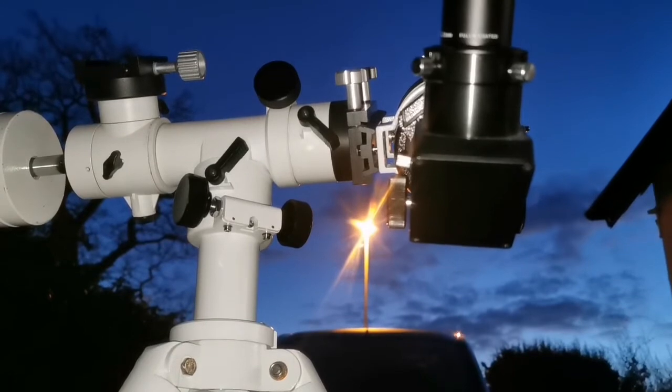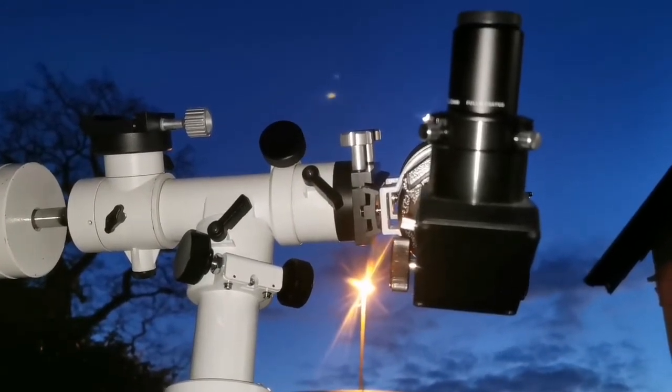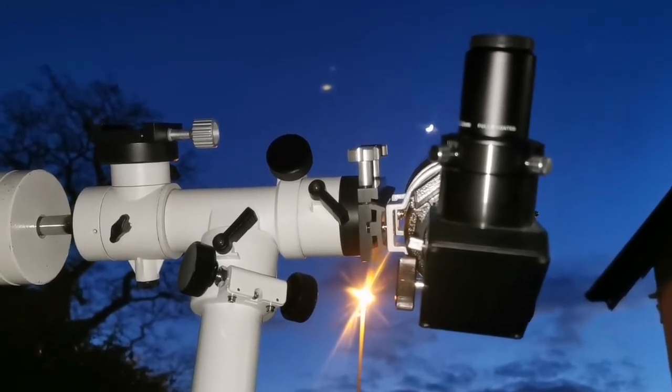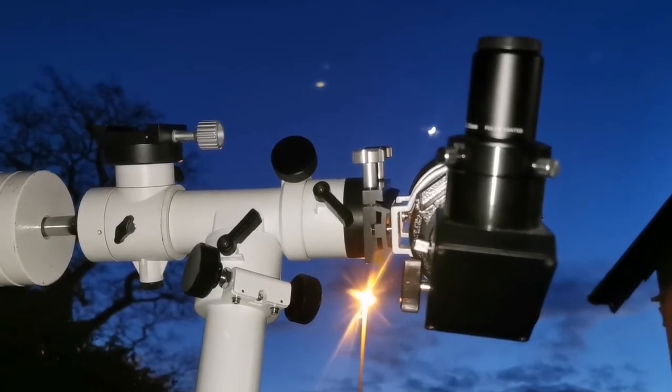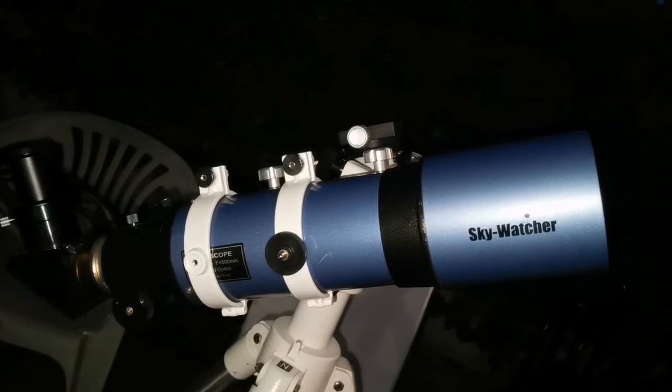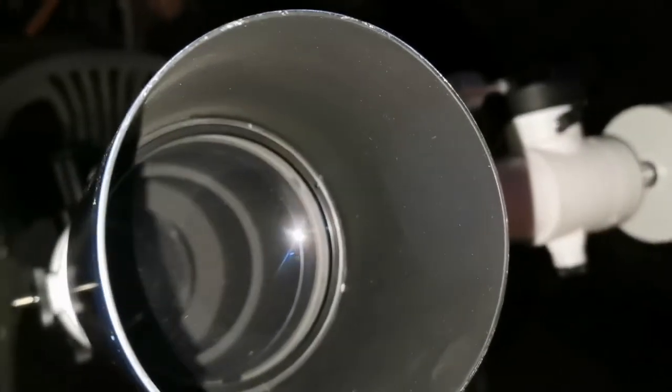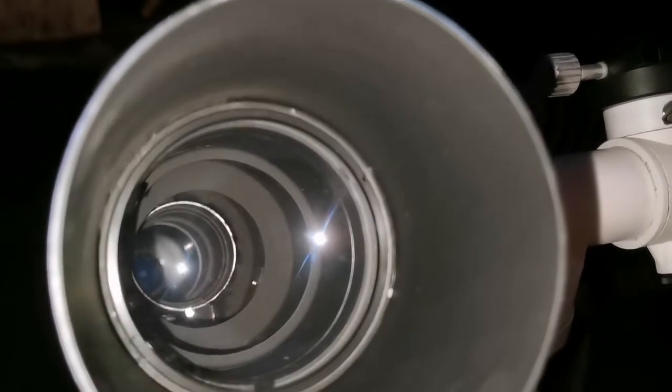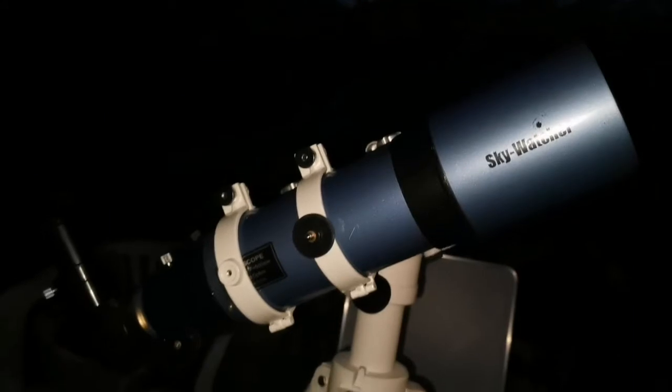I'm using the Skywatcher 102, a 4-inch F5 500 millimeter achromatic telescope to look at it more. This is the telescope itself and this is the objective lens with the baffles inside the tube. I have mounted it on